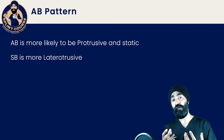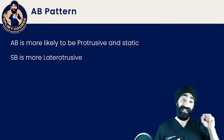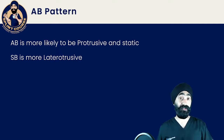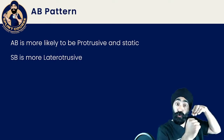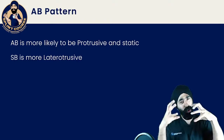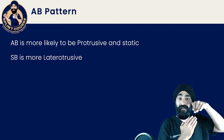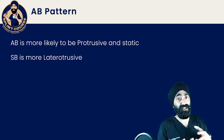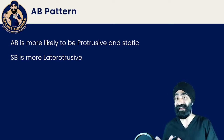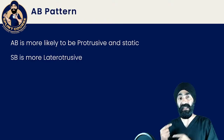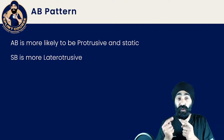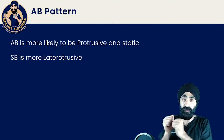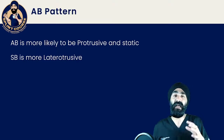One difference between sleep bruxism (SB) and awake bruxism is that awake bruxism is actually more protrusive and also involves clenching. People clench during the day, and that protrusive-type movement is quite classic. Sleep bruxism is pretty much exclusively left to right — that's the pattern we see.